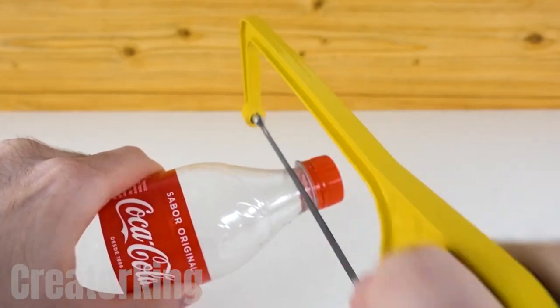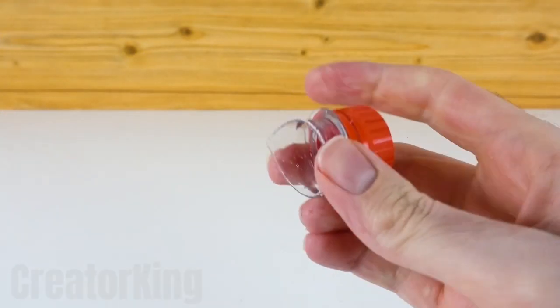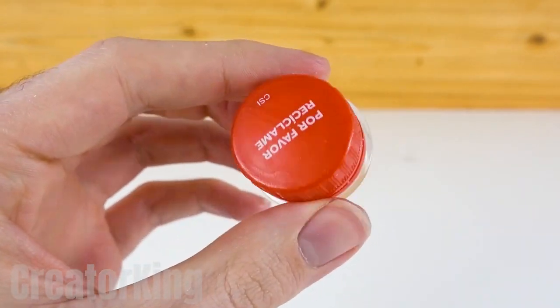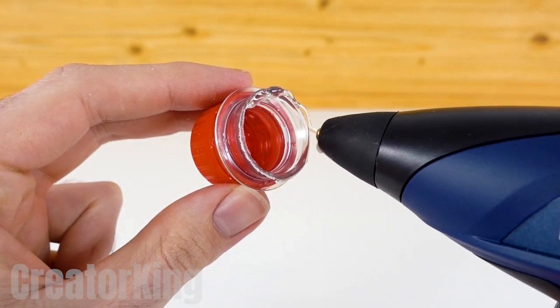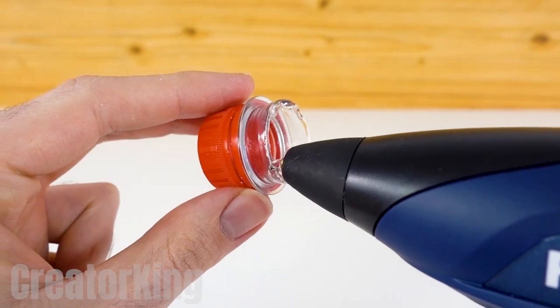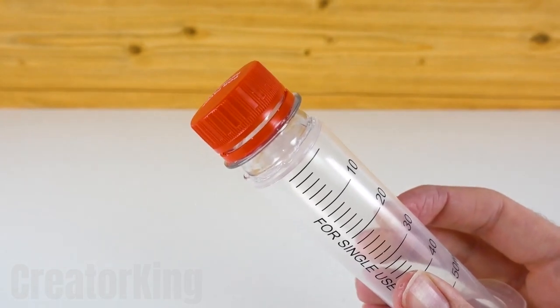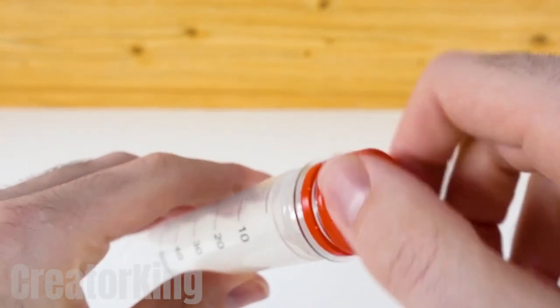Saw off the nozzle of the container until it comes off, and if there are any irregularities on the edge, cut them with scissors. Place hot glue all around the edge to attach to the hole of the syringe as a protective cap. You'll see how the rotating property of these caps will be very useful for us.